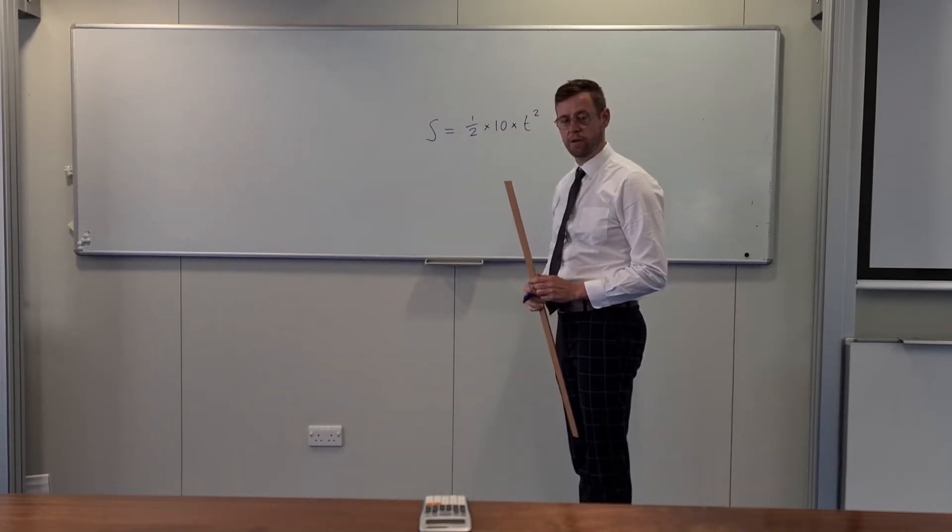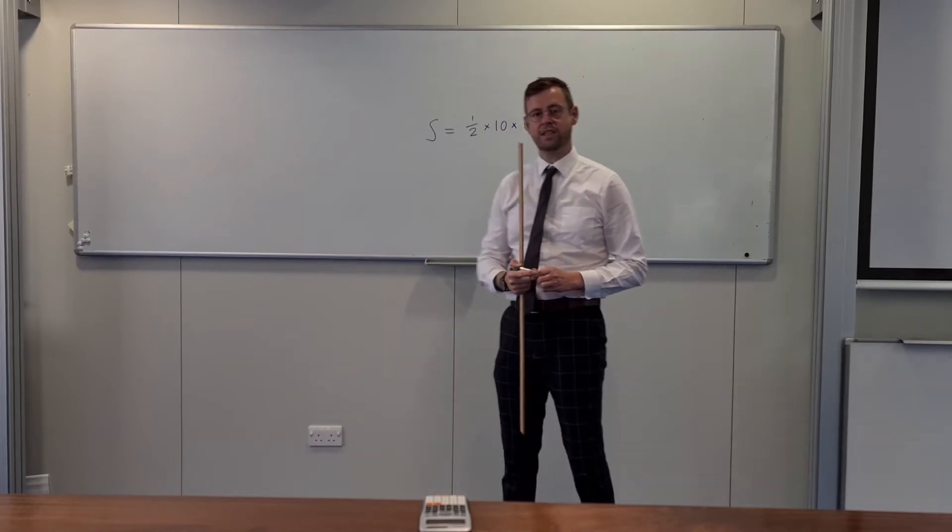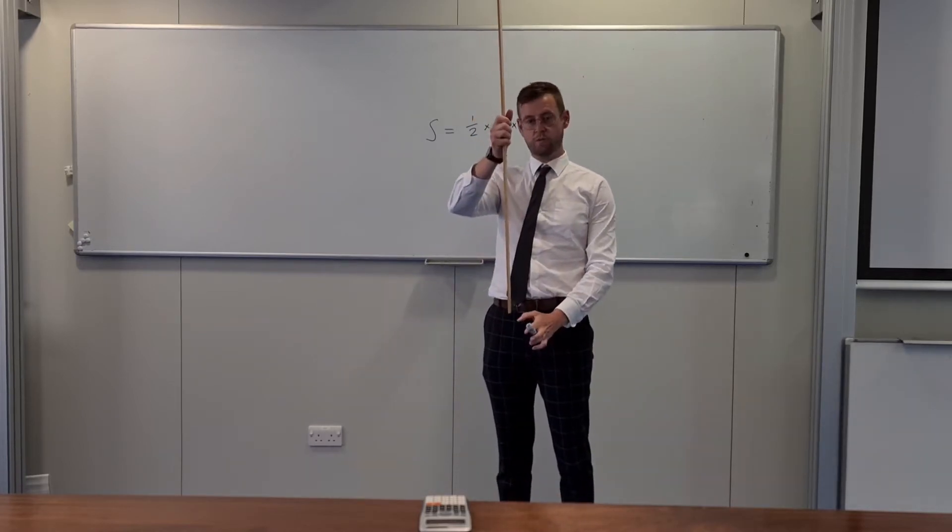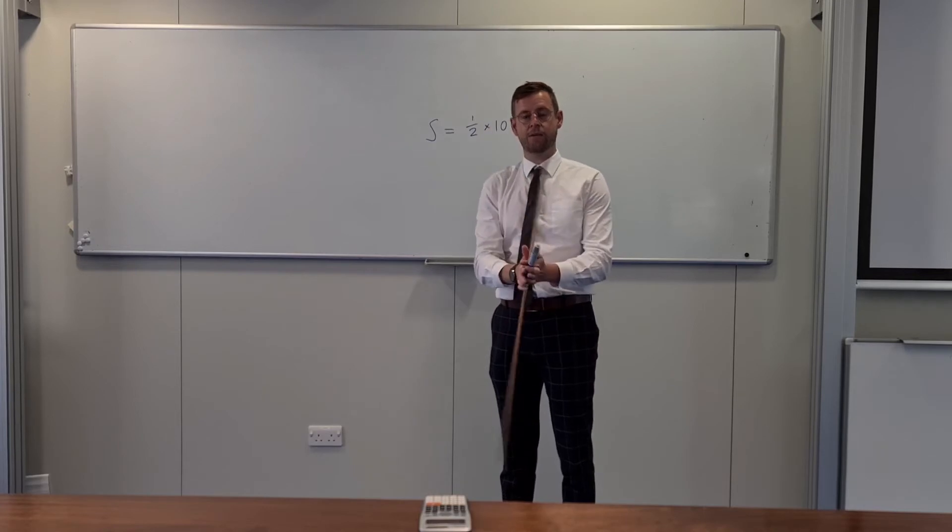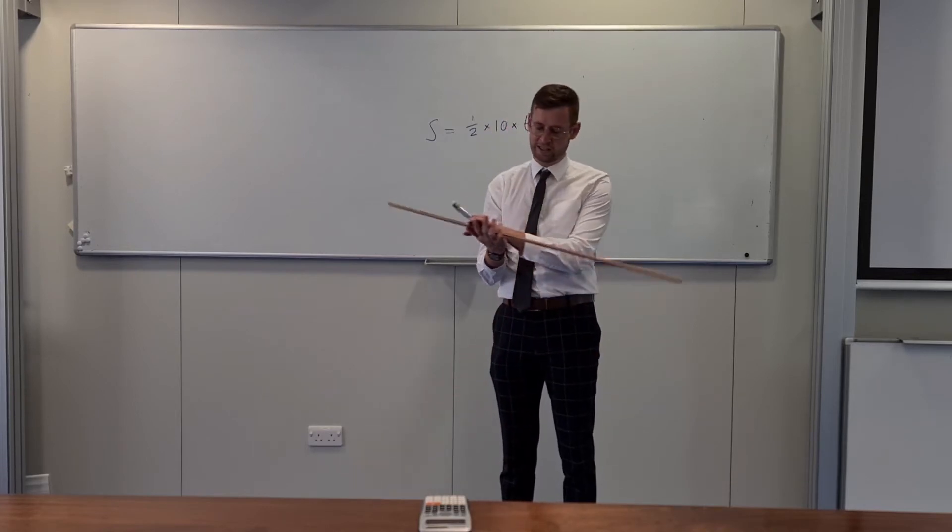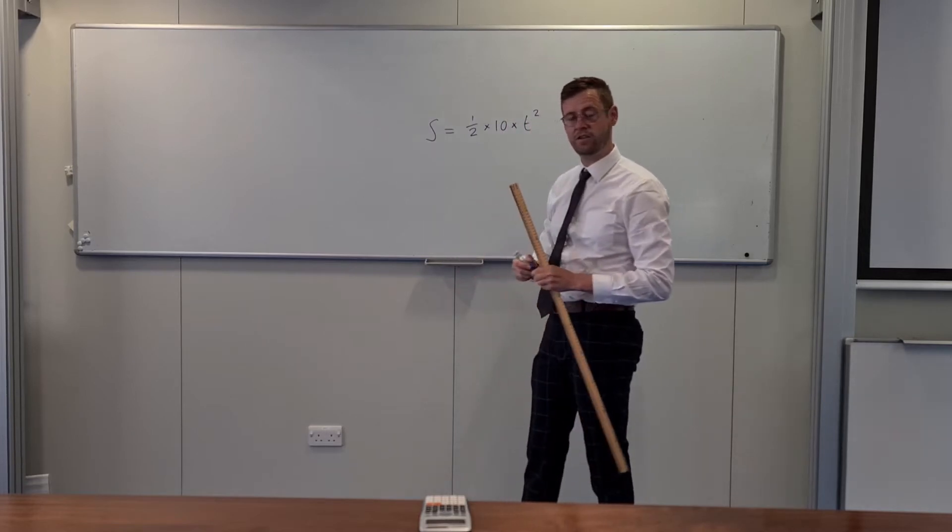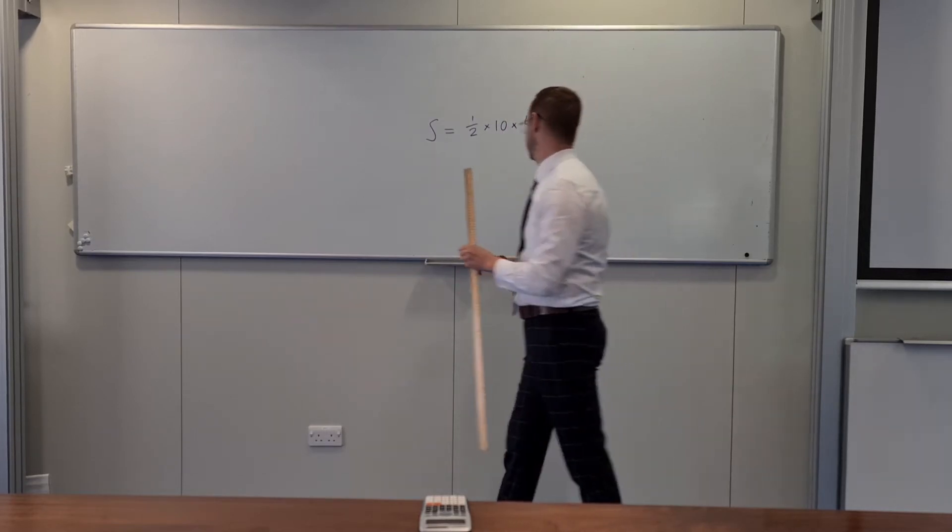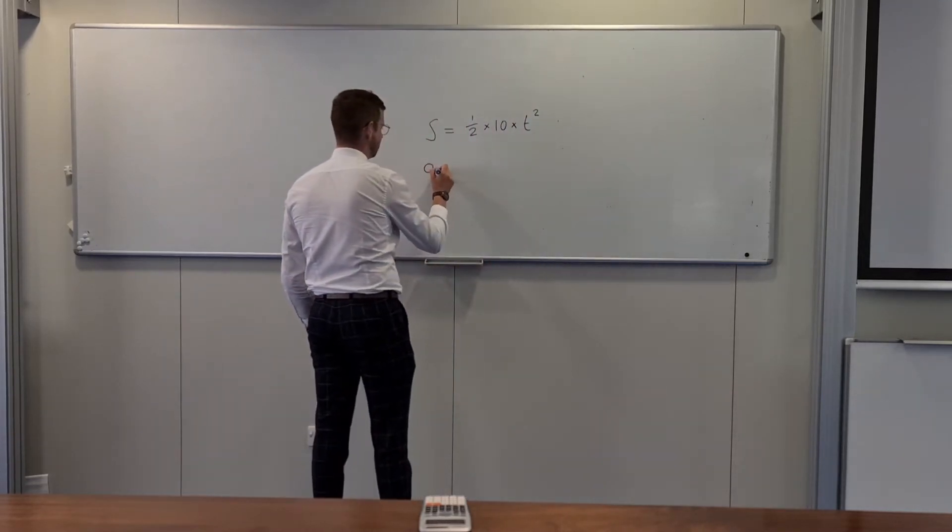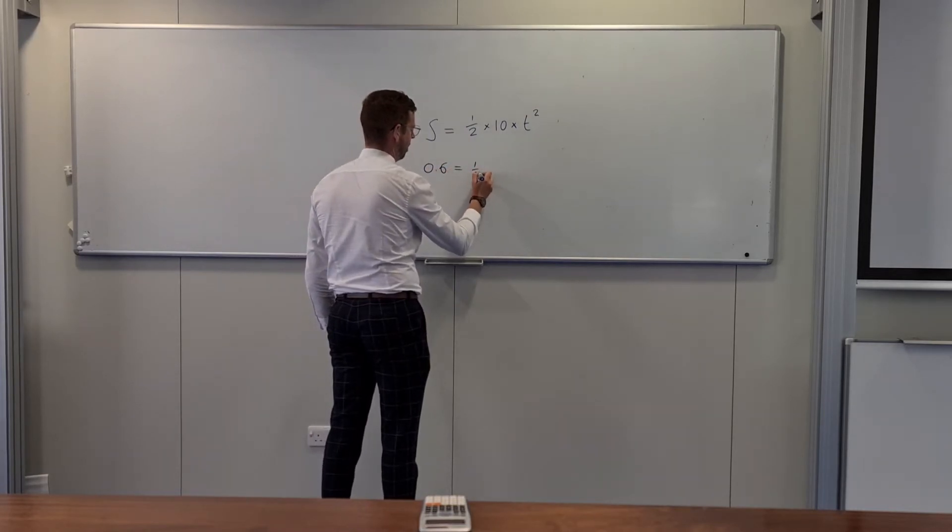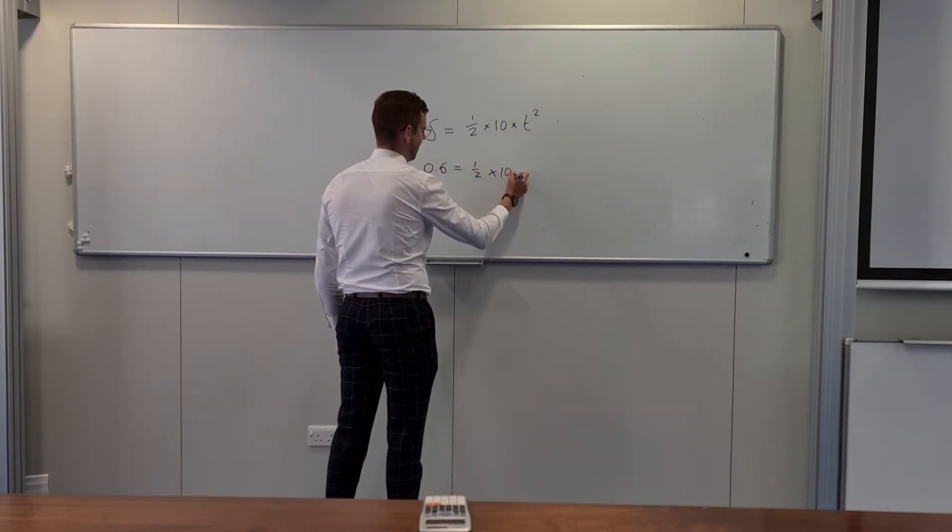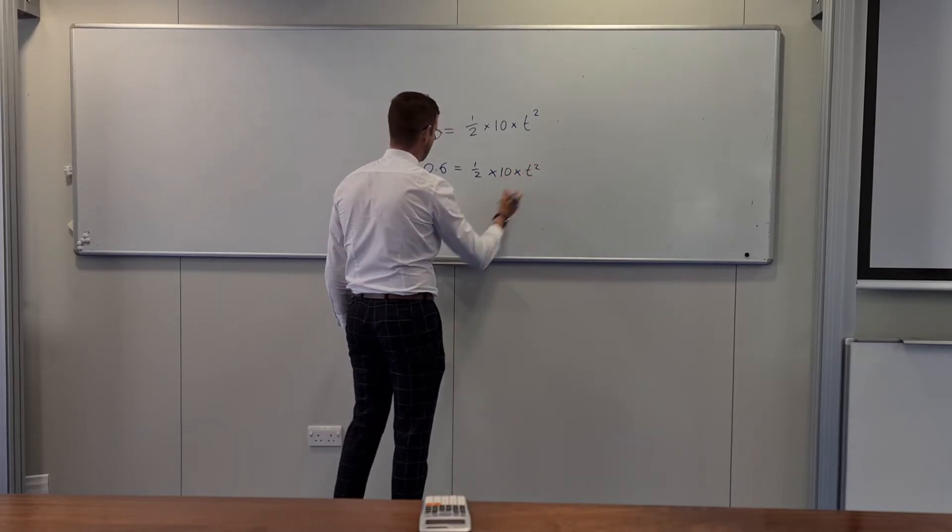So what I could do is I could test my reaction times by dropping the ruler between my fingers and where I catch it, imagining that I caught it at 60 centimeters, then I could do the following bit of maths.